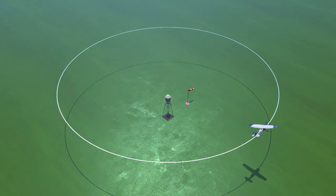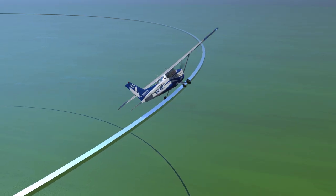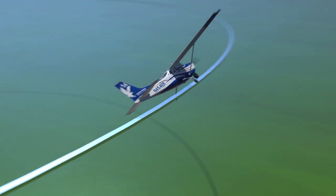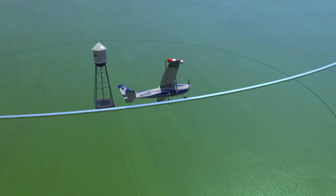The goal of this maneuver is to fly two constant radius circles around a selected reference point on the ground, correcting for wind drift. Keep in mind that your maximum bank should not exceed 45 degrees. If you find yourself needing more than that, you are too close to your reference and should widen your circle out.